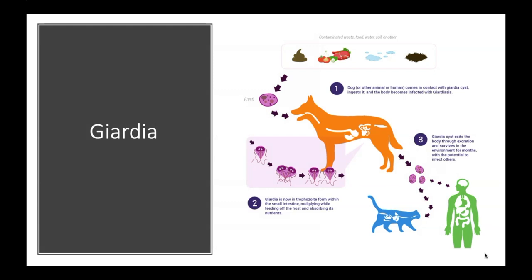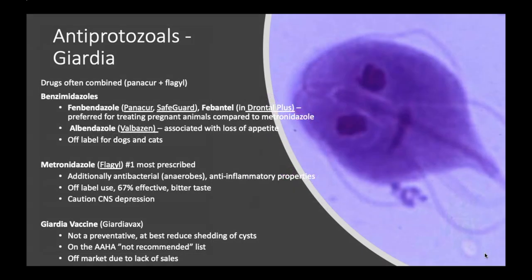Moving on to Giardia. Looking at the Giardia cycle: contaminated waste, food, water, soil, or other sources — the animal or human comes in contact with a Giardia cyst, ingests it, and becomes infected. The Giardia cyst exits the body through excretion and survives in the environment for months — which is why animals always get reinfected — with potential to infect others. Once in the body, the Giardia is a trophozoite within the small intestine, multiplying while feeding off the host. Although Giardia look cute, they're very devastating and very zoonotic.